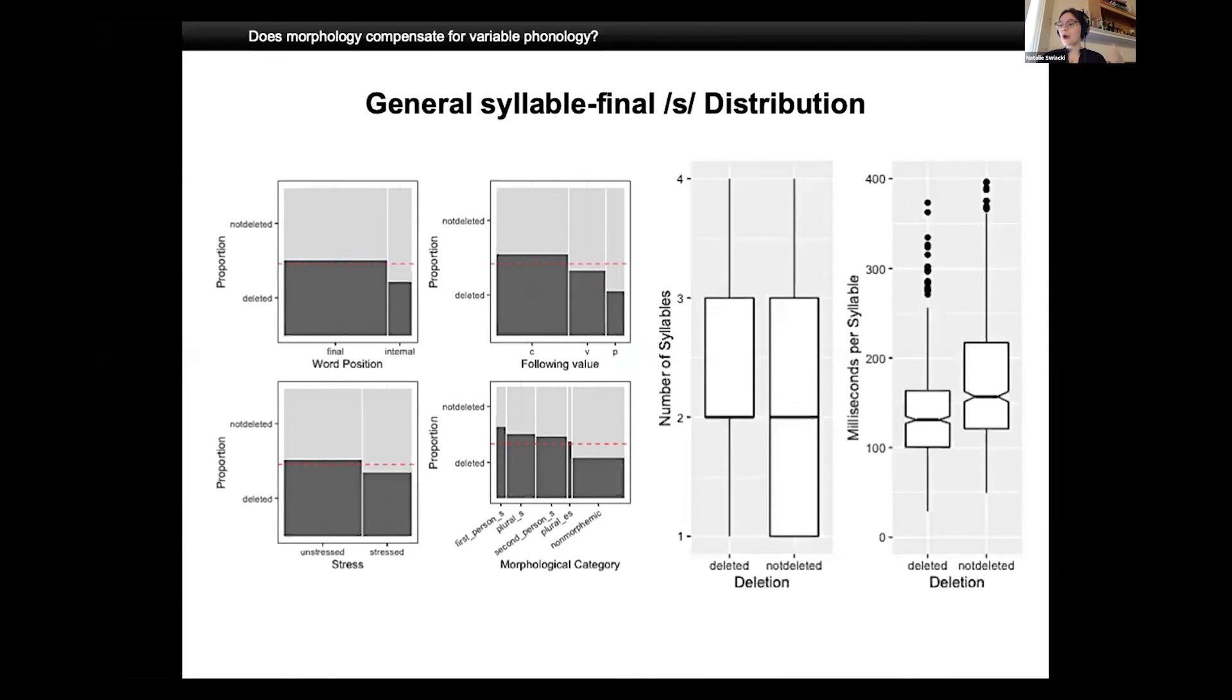On the slide here are some graphs that show the trends for general S deletion in this group of speakers. The red line on the bar plots is set at 0.49 and represents the overall proportion of deletion. So syllable final S was deleted about 49% of the time for this group of speakers. A summary of the trends shown on these graphs is that syllable final S was more likely to be deleted when it was word final, when it was followed by a consonant, when it occurred in an unstressed syllable, when it was a plural S, when it occurred in faster paced speech and when it was a part of a longer word. This result is typical for this Caribbean dialect group. I included this here to give you an idea about how these predictor variables generally affect the expression of S in Spanish.